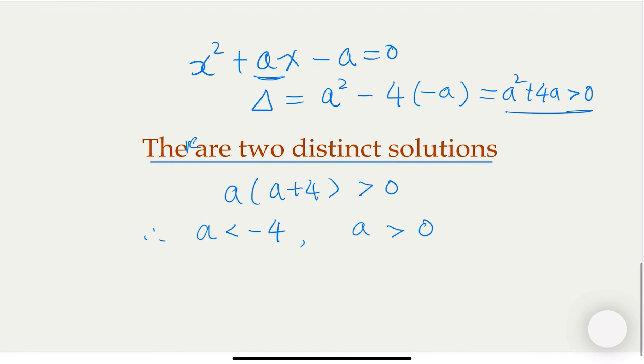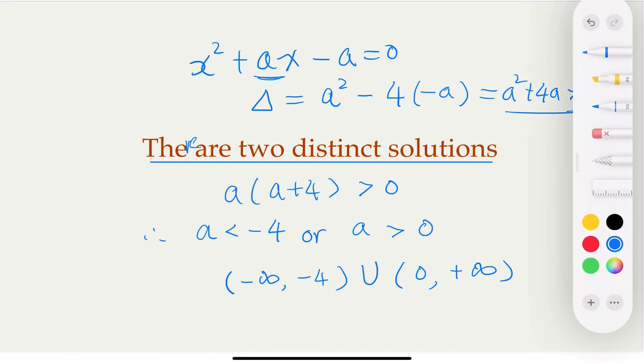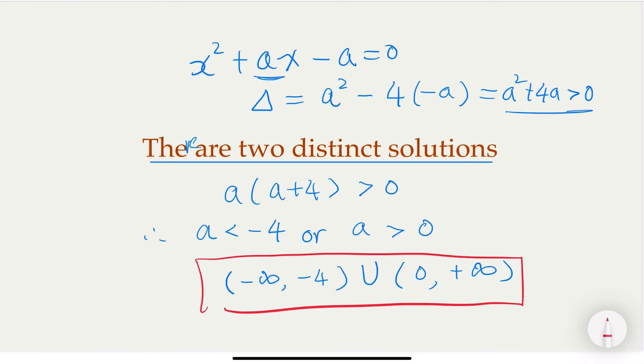So that's the answer. This is, of course, this is or. Either a is very small, smaller than negative 4, or a is bigger than 0. Sometimes in the set notation, you would say this is the interval negative infinity to negative 4, union from 0 to positive infinity. So that could be the answer of the problem. I hope you enjoyed the video. Thank you.